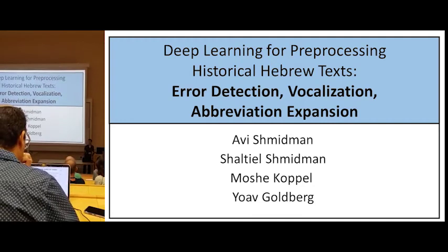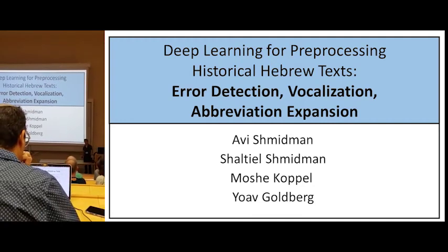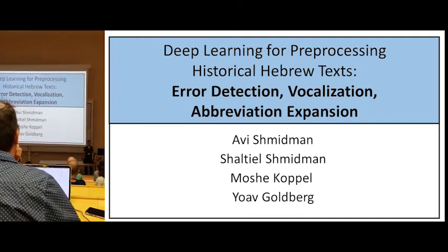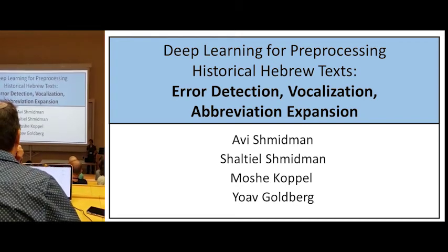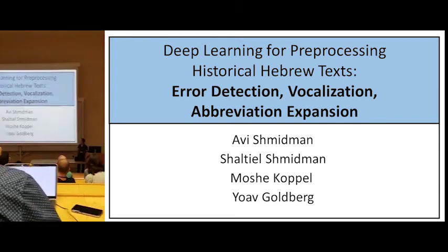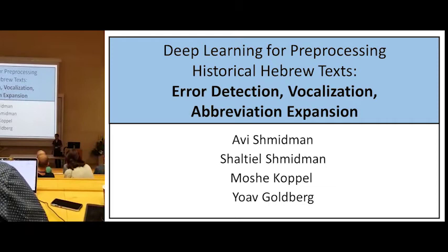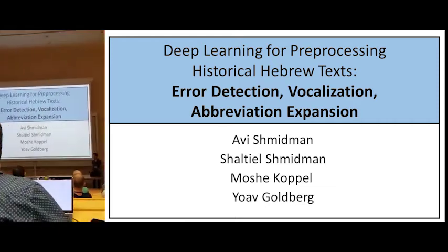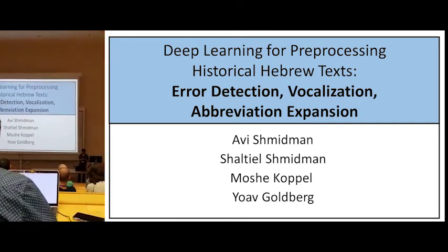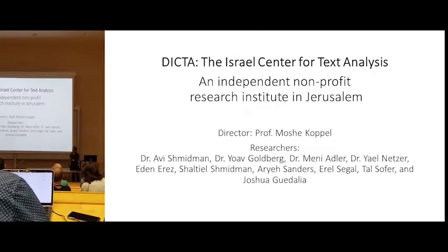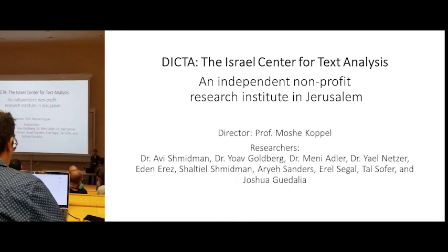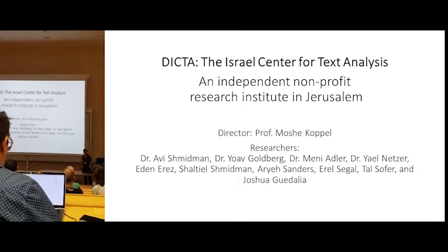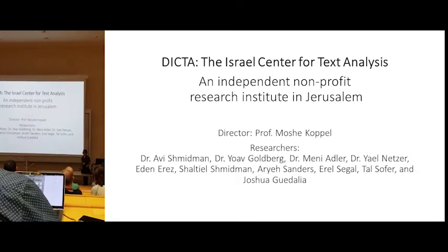Good morning, my name is Sheltiel Schwindman, and I'm going to be discussing several tasks for pre-processing historical Hebrew text using deep learning. This is joint work with Avi Schwindman, Moshe Koppel, and Yago. This research was done at Ditka, the Israel Center for Text Analysis, directed by Professor Moshe Koppel.